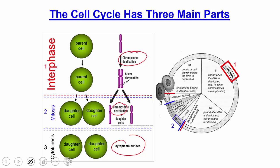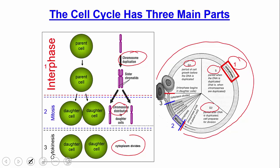We can draw this as a pie chart, roughly to scale in terms of time. Interphase takes the most time and has three subcomponents: G1 (gap one), a period of growth before DNA is duplicated; S (synthesis), where DNA is duplicated; and G2 (gap two), where the cell prepares for division. Interphase is by far the longest part of the cell cycle. Mitosis has four substages: prophase, metaphase, anaphase, and telophase. The final part, cytokinesis — step three — is where the cytoplasm divides and is by far the quickest part of the process.